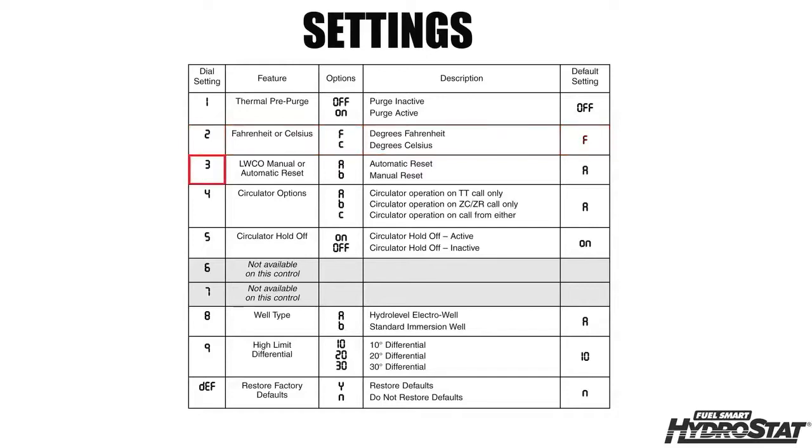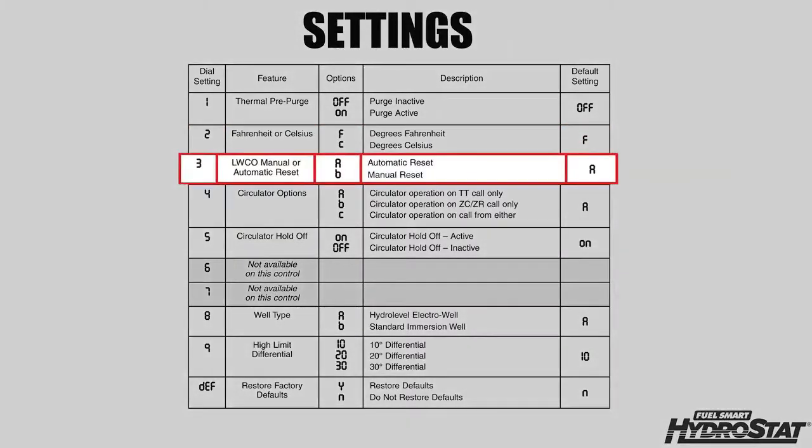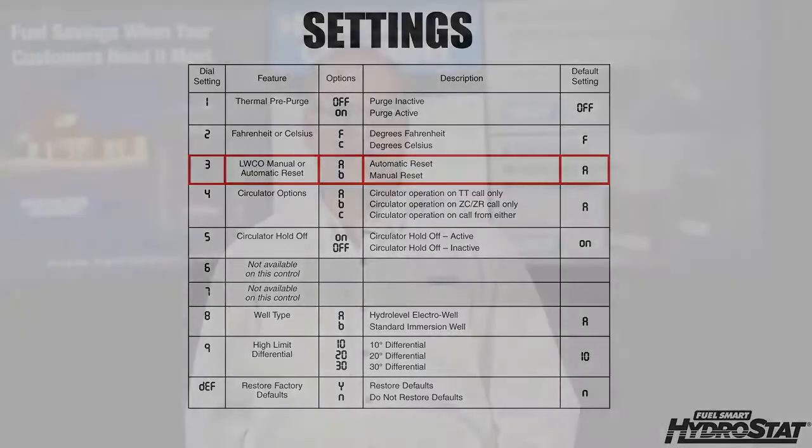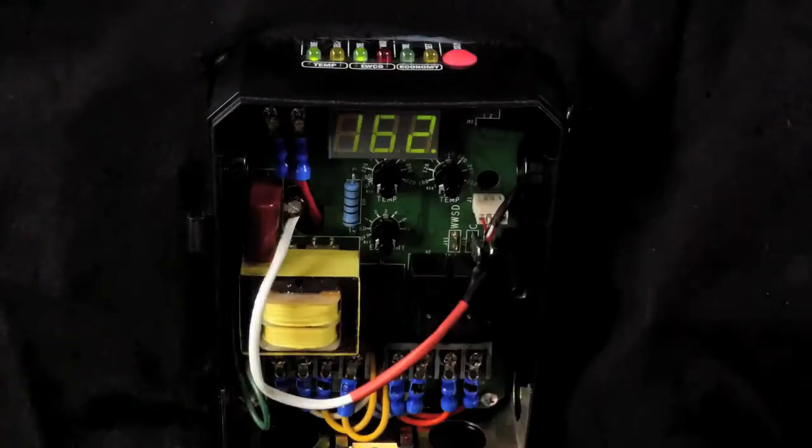Option three enables you to change the operation of the low water cutoff to function as a manual reset control. This can be a useful feature if the boiler is installed in a commercial building that may require a manual reset low water cutoff. When the control is set to this manual reset mode,